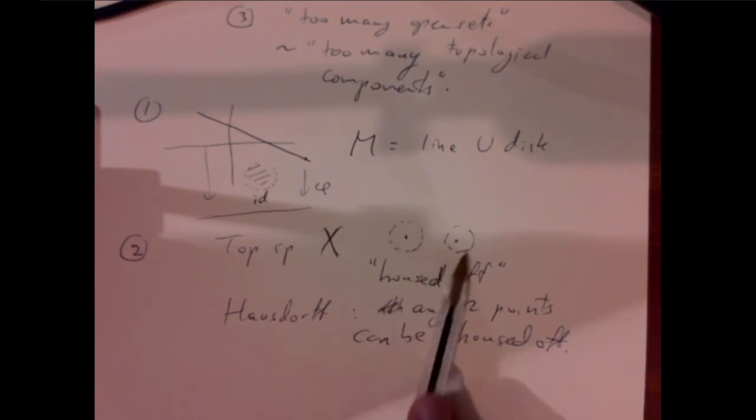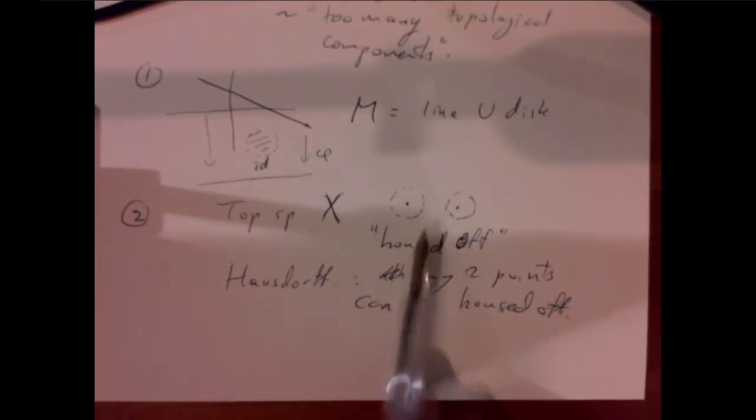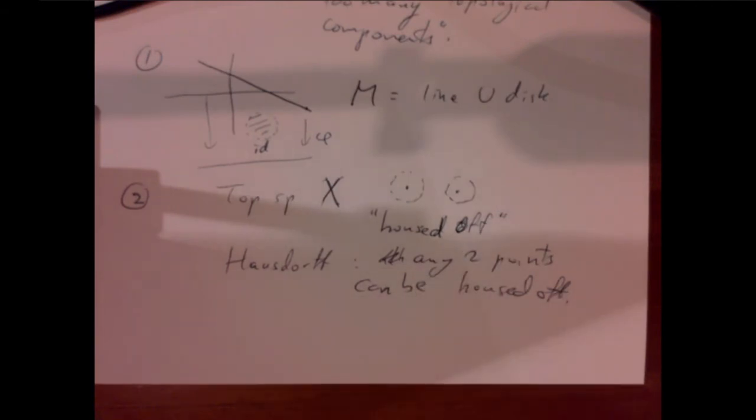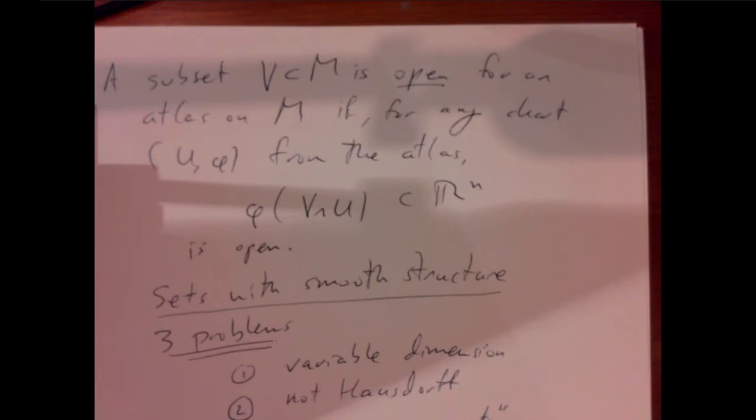Intuitively, the plane is obviously Hausdorff because you can make little disks around each point so small that they don't overlap. Generally speaking, the kinds of spaces we're interested in are usually Hausdorff — it takes a strong stomach to study non-Hausdorff spaces. All metric spaces are Hausdorff, so the spaces we're familiar with tend to be Hausdorff. Can we come up with an example of a set with smooth structure that's not Hausdorff? It's hard, but let's try.